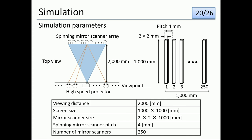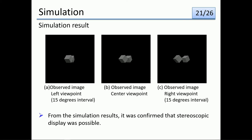I will now talk about the simulation. The simulation parameters are shown in the table. The purpose of the simulation was to verify that the proposed method could display 3D images. The simulation result is shown in the figure. Image P is the image viewed from the front of the screen. Images A and C are images observed when moving 15 degrees left and right from the front. From the simulation results, it was confirmed that the appearance of the image changes depending on observation position, and that it can be displayed in 3D.